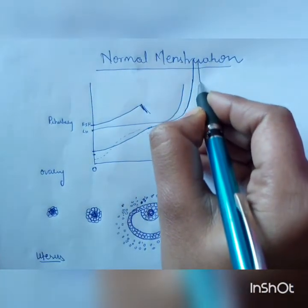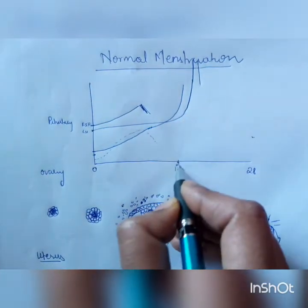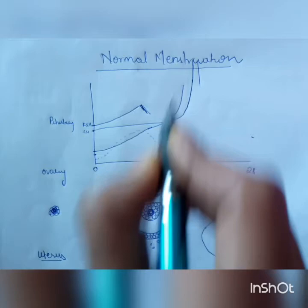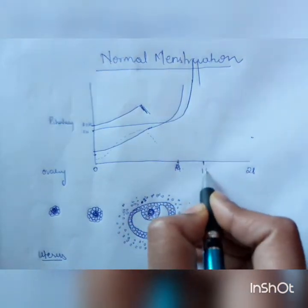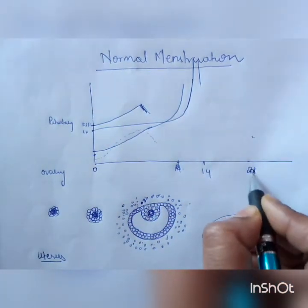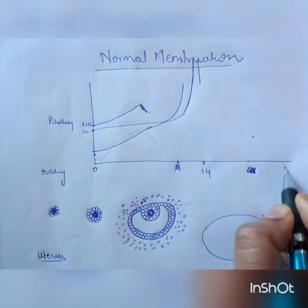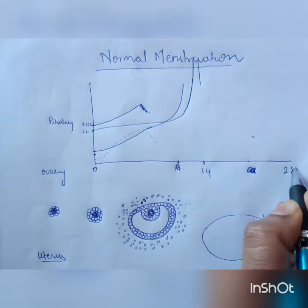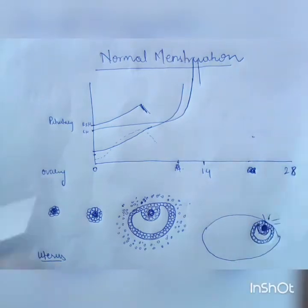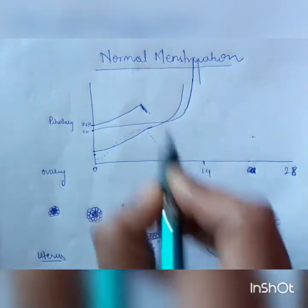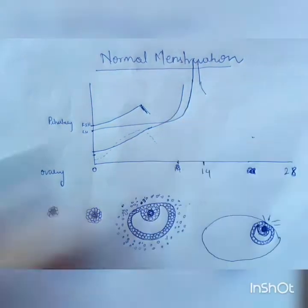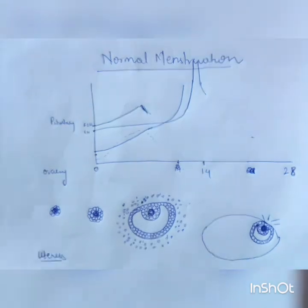Here occurs the LH surge. If the LH surge comes here, day 14 will be somewhere around this point. So, day 14 is when ovulation takes place. What triggers ovulation? Let us see the functions of LH.